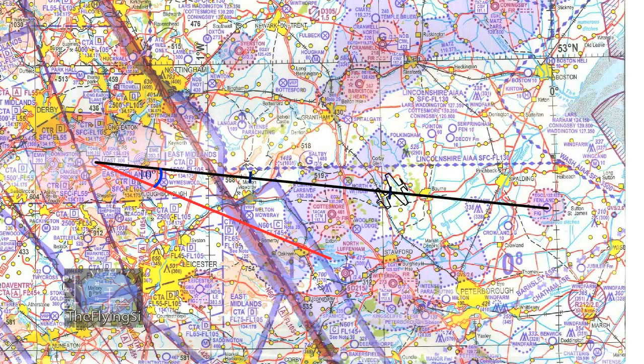Instead of five degrees left we actually apply ten degrees left and fly using that amended heading. That will bring us back onto track. The trick here is that we make a note of the time when we're overhead Melton Mowbray — for argument's sake we'll call that ten minutes. We now fly our double drift heading, ten degrees extra to the left, for another ten minutes, and after that time period we should be back on track. Once back on track we apply only the single drift correction — the extra five degrees to the left — so we take five degrees off, turn to the right by five degrees, and continue.